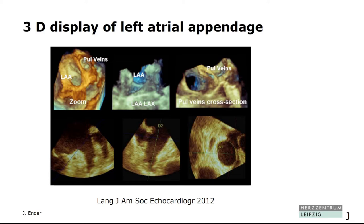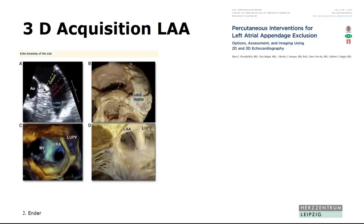Then the left atrial appendage. Who of you is involved in left atrial appendage closure procedures — doing anesthesia or also the TEE? The nice thing in 3D for the left atrial appendage is that you can measure everything the interventionalist needs to decide which size of closure device: the length, the circumference, and the diameter. You have to center your left atrial appendage in 2D and then you can do either a live 3D or zoom mode. I would recommend the publication from Nina Wunderlich — she's in Frankfurt — with nice pictures showing the anatomy.